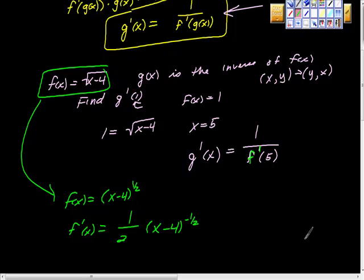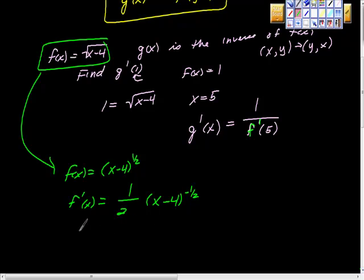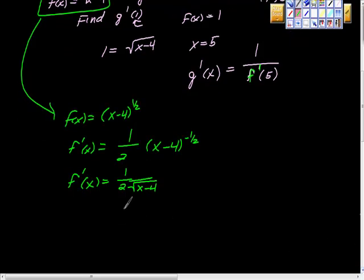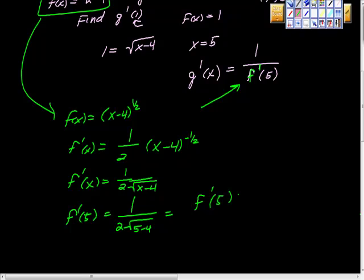The derivative of the inside is 1, so it doesn't change anything. So we know now that f prime at x is equal to 1 half over the square root of x minus 4. Let me say that again. f prime at x is equal to 1 over 2 times the square root of x minus 4. Now we'll take f prime at 5. So f prime at 5, f prime at 5 is equal to 2 times 5 minus 4. So f prime at 5 is equal to 1 half.